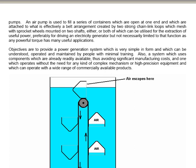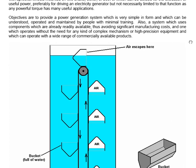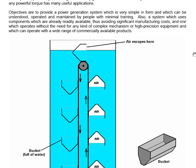Objectives are to provide a power generation system which is very simple in form and which can be understood, operated, and maintained by people with minimal training. Also, a system which uses components which are readily available, thus avoiding significant manufacturing costs, and one which operates without the need for any kind of complex mechanism or high-precision equipment, and which can operate with a wide range of commercially available products.